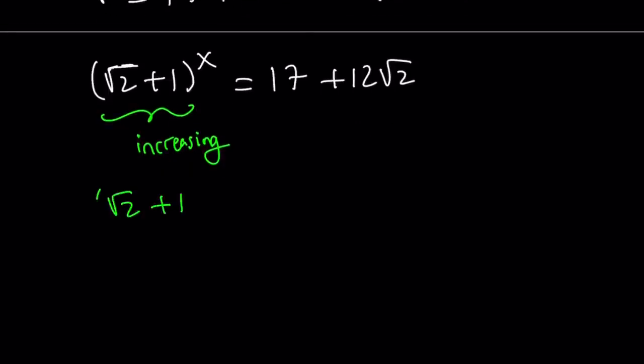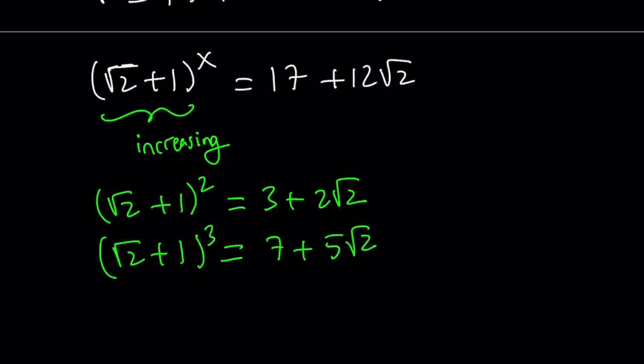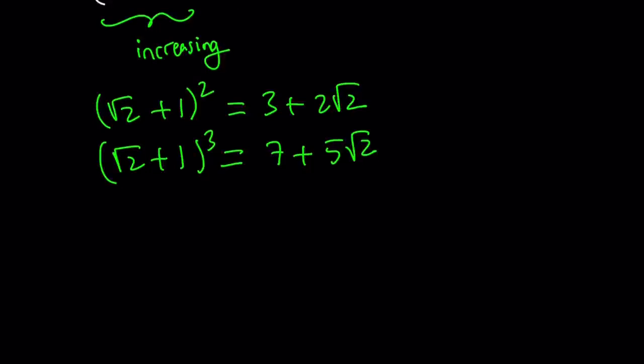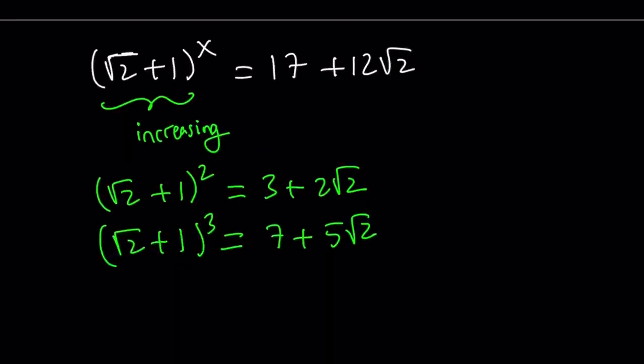Square root of 2 plus 1 squared is going to give us square root of 2 squared, which is 2, 2 plus 1, 3 plus 2 root 2. If you take square root of 2 plus 1 to the third power, you're going to get 7 plus 5 root 2. Let me just go ahead and give it to you. It's very easy. You can just use the formulas. Now, notice that as I use higher powers, I'm getting closer to these numbers.